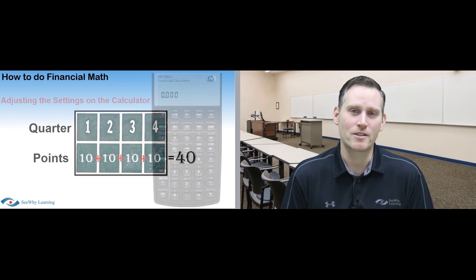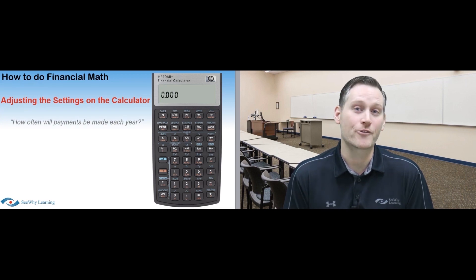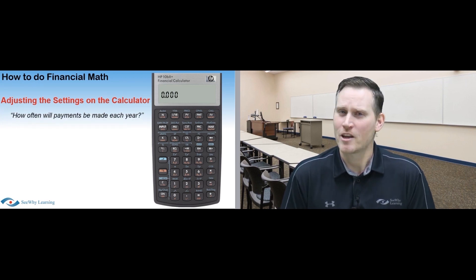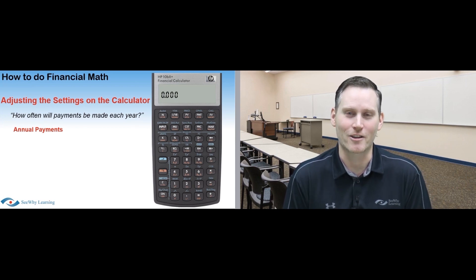Now, the first thing we're going to do is adjust the settings on the calculator, and by settings, I'm referring to things like, how often will payments be made each year? Now, most questions will involve annual payments, but more challenging questions could involve a different number of payments, say 2 or 12. If that's the case, you follow this same process to set the calculator accordingly.